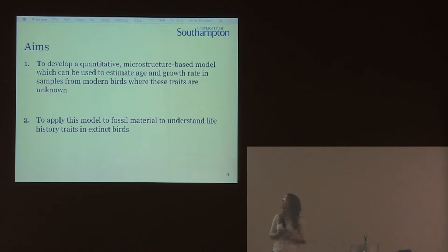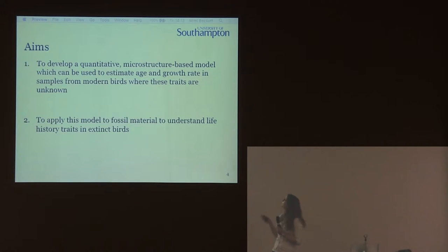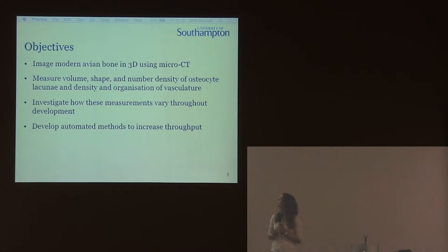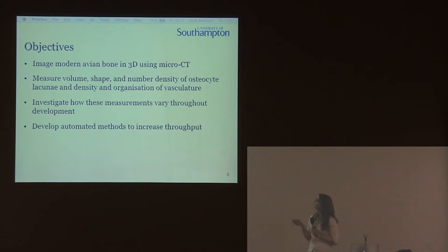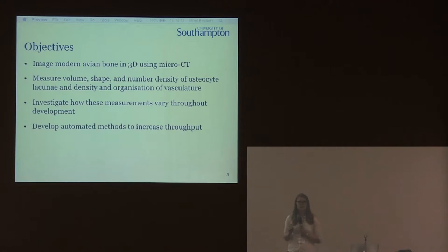I think that this is a problem not just in Archaeopteryx, but more broadly across Mesozoic birds — some species identified as different species could be members of different growth series of fewer species. So the aim of my project is to develop a quantitative, microstructure-based model to estimate developmental age, initially using modern bird comparison, and then apply that to fossil birds to better understand the biology of Mesozoic birds. Specifically, I'm imaging modern avian bone using micro-CT, measuring histological features including volume, shape, and number density of the osteocyte lacunae — the spaces where bone cells used to be — and also the organisation of vasculature.